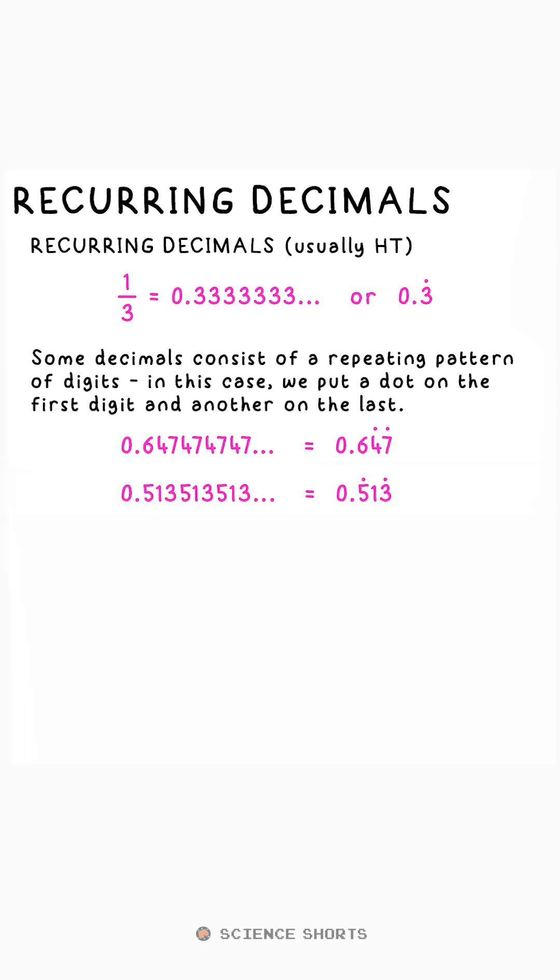If there's three or more digits that repeat, we technically put the dots above the first and last bit of the pattern. So this would be 0.513513513 forever.